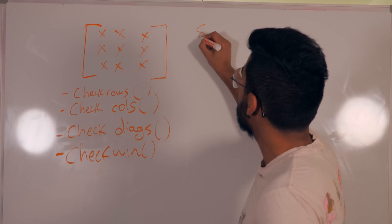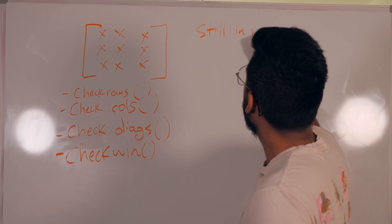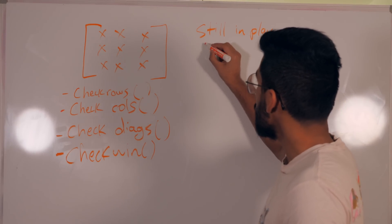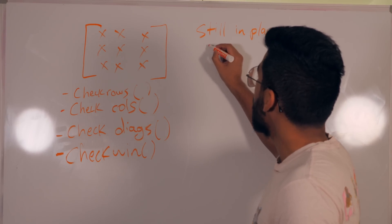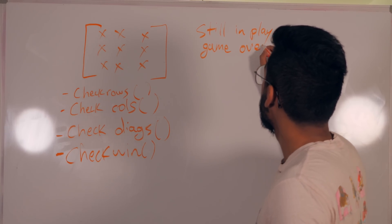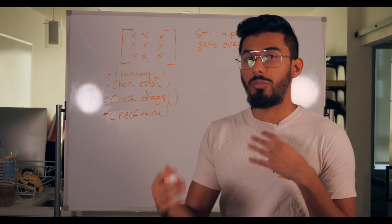So we need some states as well for this board. We need to have a state where it tells us whether the game is still playing. So for example, we can have a still in play, or we can have a state that says the game is game over.